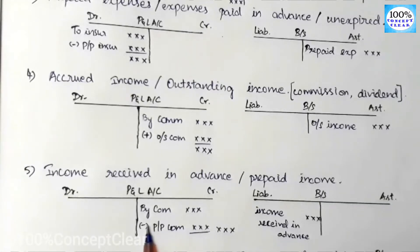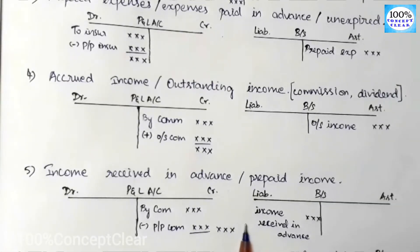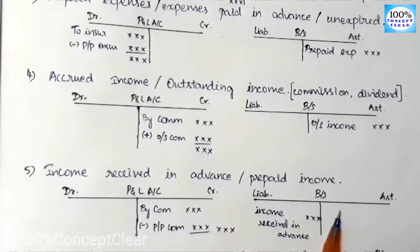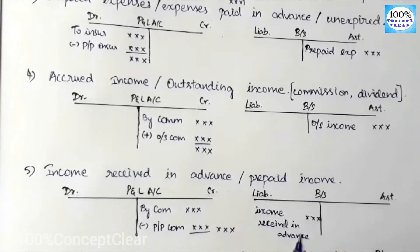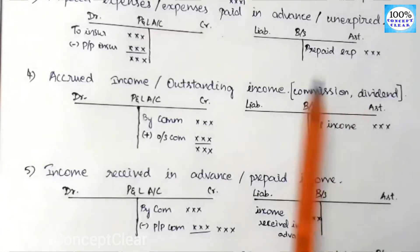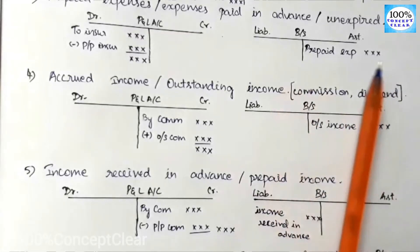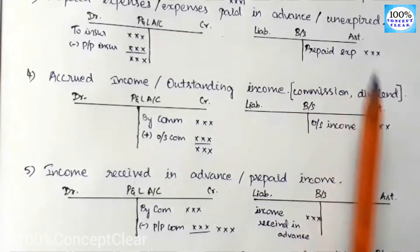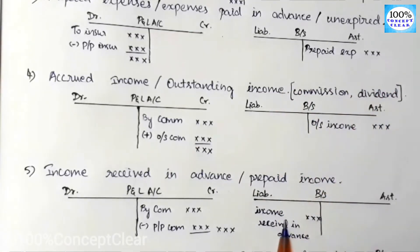The amount is minused in the P&L account for income received in advance. In short, prepaid expenses are an asset on the balance sheet, and prepaid income (income received in advance) is a liability on the balance sheet.